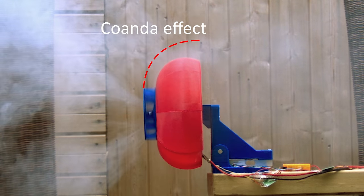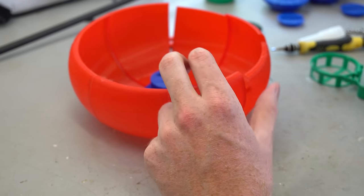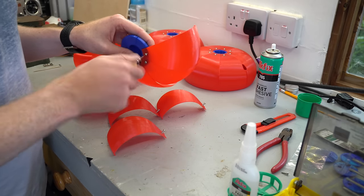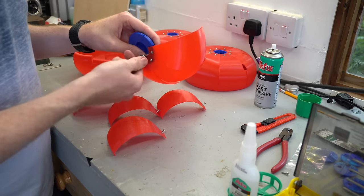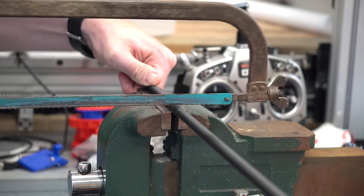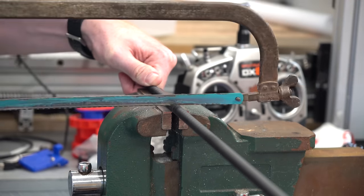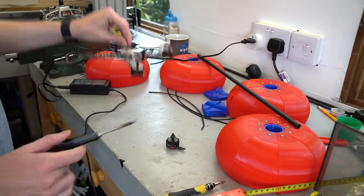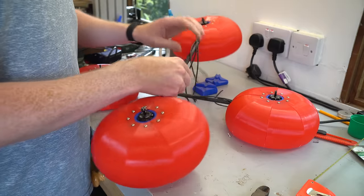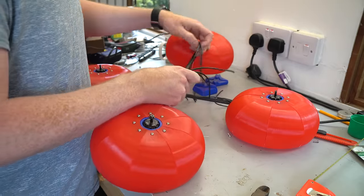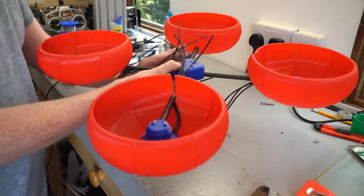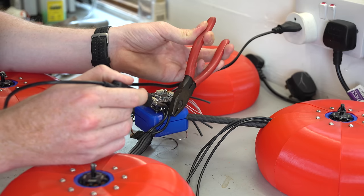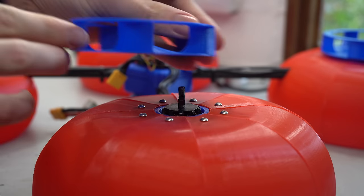Getting on with the build, repeating the dome construction another three times wasn't very enjoyable with all the CA glue fumes. I recycled the motors from a working drone to build this thing. Once the arms were attached to the domes and laid out in a quadcopter shape, it looked like a formation of Chinese lanterns or a few salad bowls. With the electronics installed and motors soldered up, it was time to fit the impellers and see if this thing will fly.